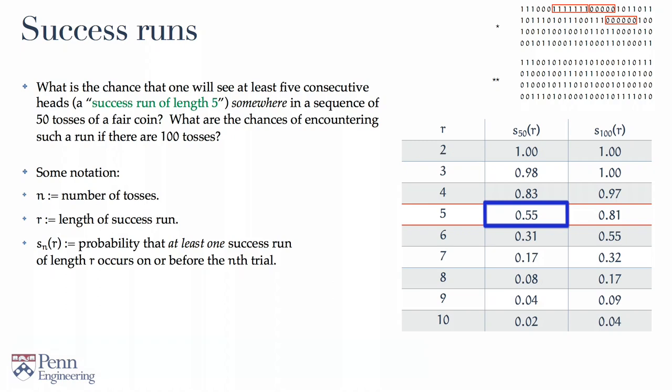The probabilities get even more remarkably large for 100 tosses. The chance of obtaining a success run of length 5, somewhere in a sequence of 100 tosses, is now 81%. This is where intuition boggles. It doesn't feel right to the untrained intuition that these probabilities are as large as they seem to be.